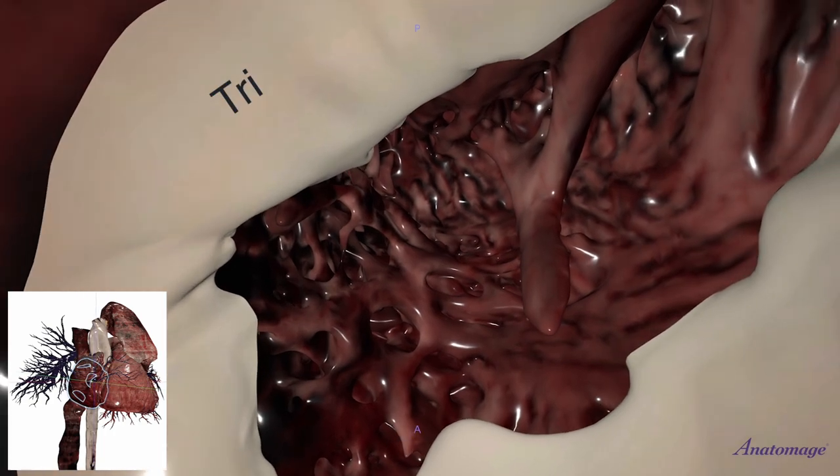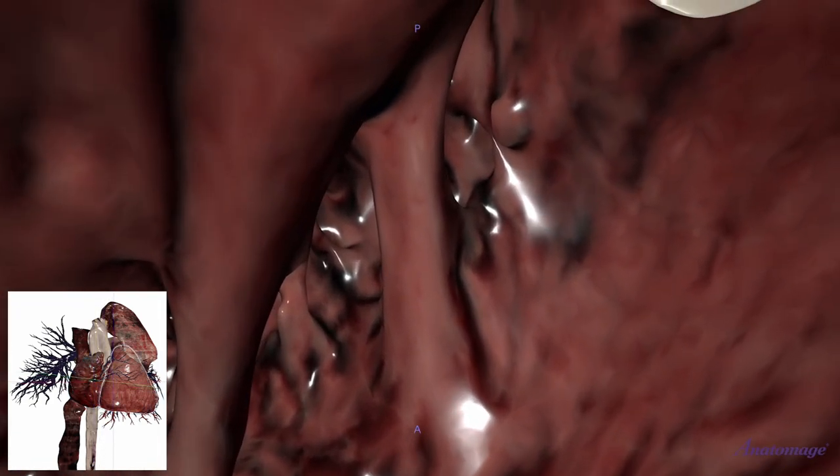And on the right, there's the tricuspid valve. We go from right atrium down into right ventricle and there's the trabeculae carnea of the right ventricle.